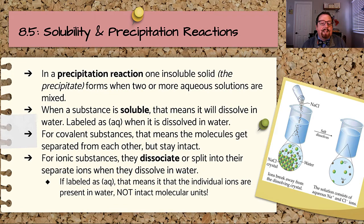If a substance is soluble, it means the substance can dissolve in water. We label it as aqueous for the state symbol when it is dissolved in water. For covalent substances, this means the molecules break away from each other, but they still stay as molecules.